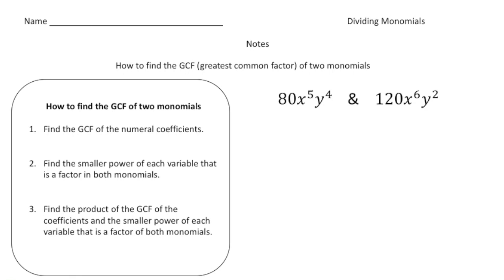Let's turn the page and take a look at the second page of notes. In this case we want to find the greatest common factor of two monomials. We have 80x to the fifth y to the fourth and 120x to the sixth y squared, and I want to find the greatest common factor of both of these.